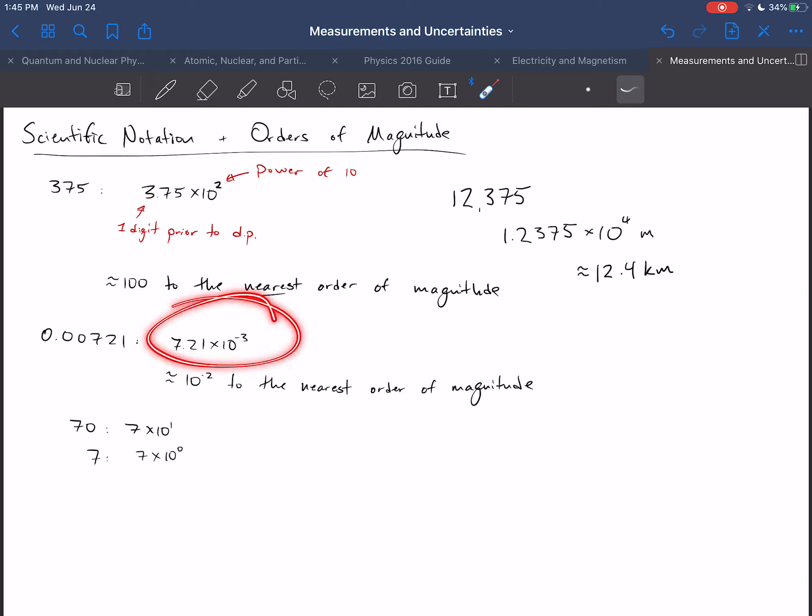Now, what about this value? Well, you have to be a little bit careful, right? Our instinct is to read the nearest order of magnitude off the power of 10 given. And while that is a totally reasonable thing to do, as it turns out, right, 7 is closer to 10 than it is to 1. So this is actually 10 to the negative 2 to the nearest order of magnitude.